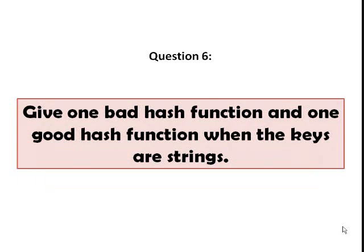Number six, give one bad hash function and one good hash function when the keys are strings. An example of a bad hash function is one that uses only the first three characters in the string. This is considered a bad hash function because English is not random. When you select only the first three characters in the string, chances are you get only a limited hash values as your result.